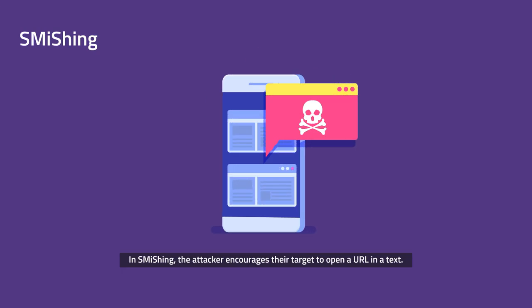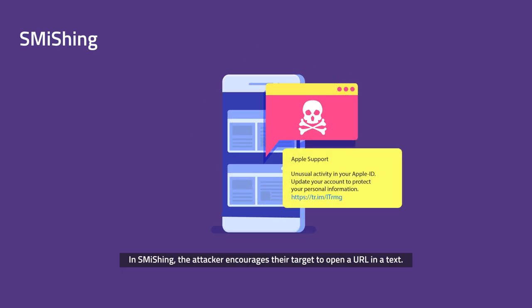In smishing, the attacker encourages their target to open a URL in a text. The URL then takes them to a fraudulent credential login page or installs malware onto the user's device.